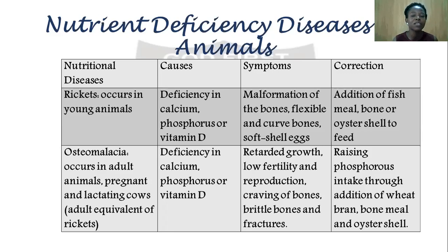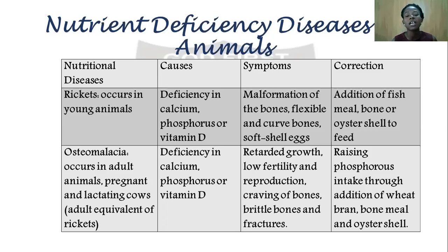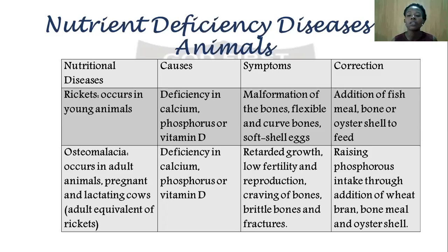The next disease is osteomalacia, which is the equivalent of rickets but occurs in already grown adult animals. It is also caused by deficiency of calcium, phosphorus, and vitamin D. Symptoms include retarded growth, infertility, reproductive problems, curving of bones, and brittle bones prone to fracture. To correct this deficiency, you need to raise the phosphorus and calcium intake through addition of wheat bran — which is very high in calcium and phosphorus — as well as bone meal and oyster shell.